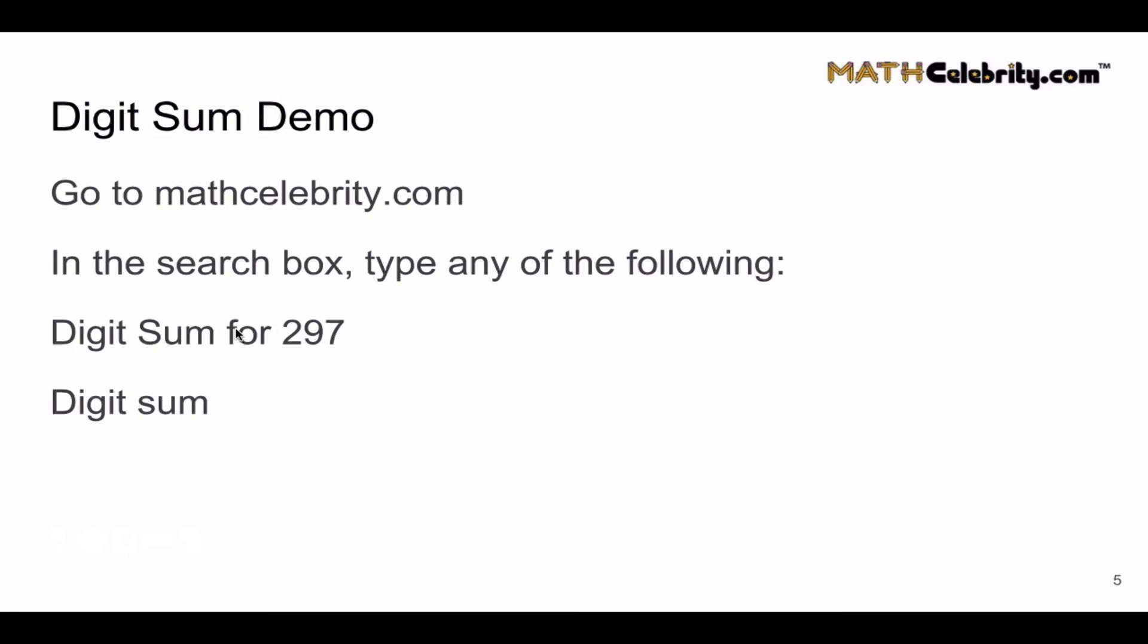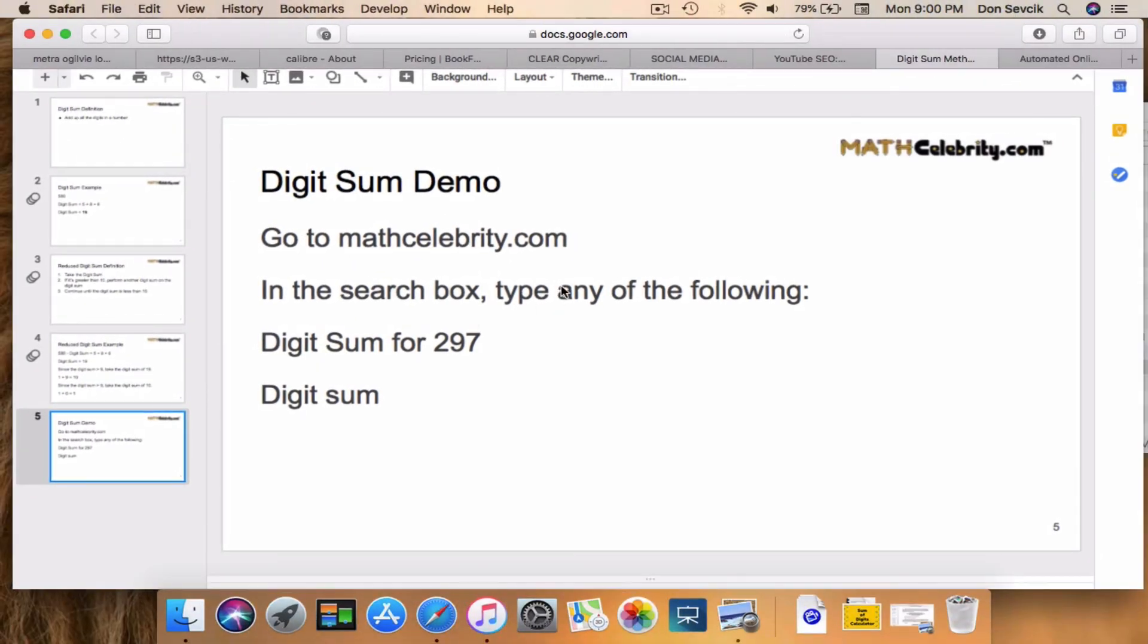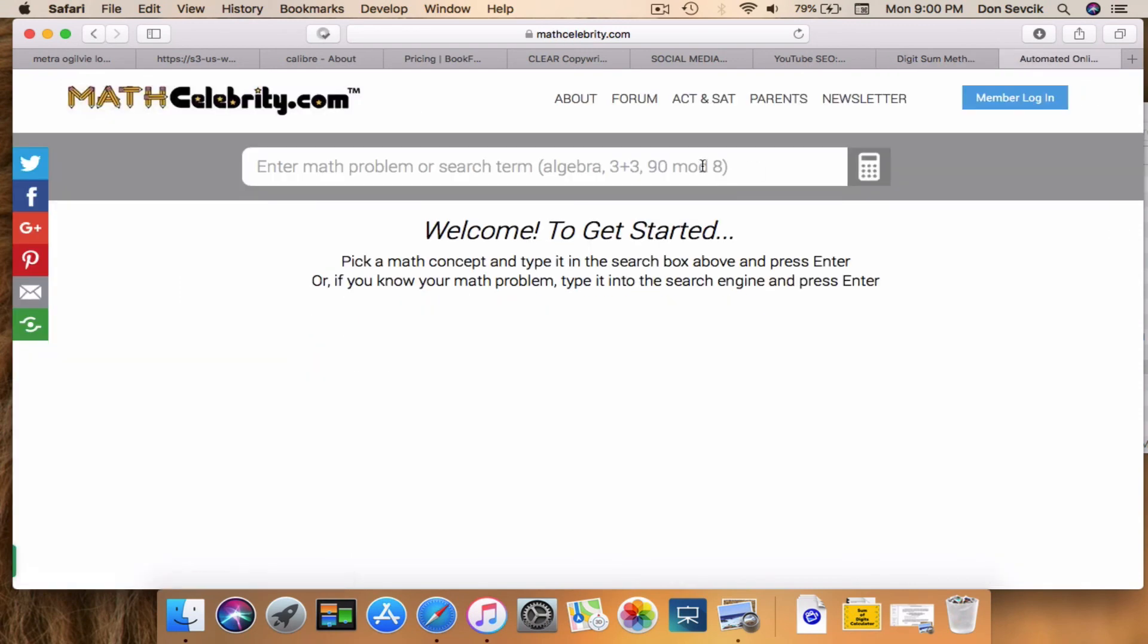If you know your number, you just type 'digit sum for' or 'of 297' for example, or just 'digit sum'. So let's go ahead and run a problem.